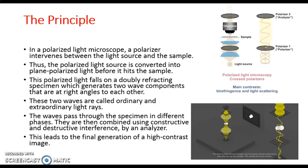Now, coming to the principle. In polarized light microscopy, a polarizer is placed between the light source and the sample. The polarizer prevents vibration in all directions and helps the light to pass through it in one direction. So the polarized light is converted into plane polarized light before it hits the sample.